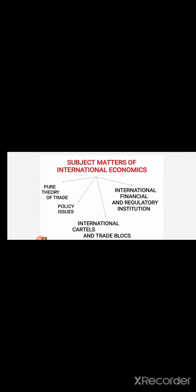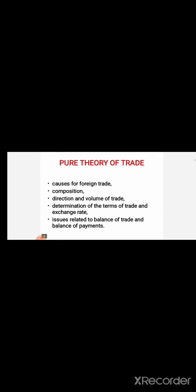International economics basically deals with four subject matters: first, the pure theory of trade; second, policy issues which are interrelated with trade; third, international cartels and trade blocks; and fourth, international financial and regulatory institutions which govern international trade. Now let us discuss each in depth. Under the pure theory of trade, this component explains what are the causes for foreign trade — why a country should go in for foreign trade, because that particular commodity might not be available or cannot be produced in that country.